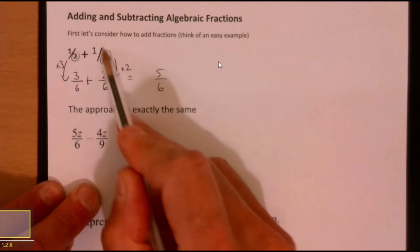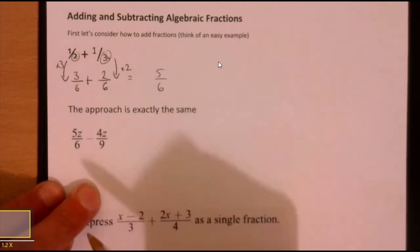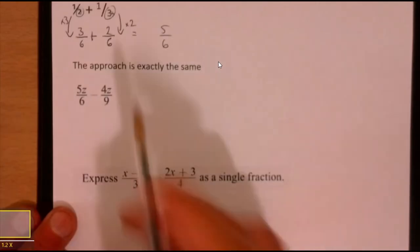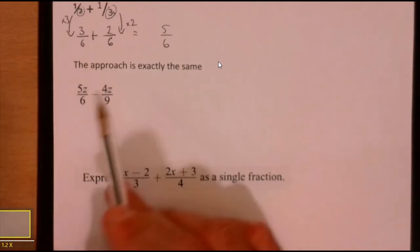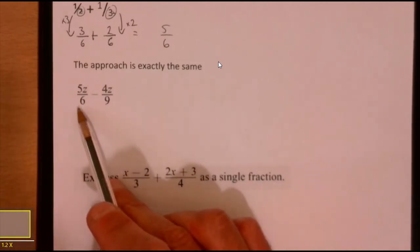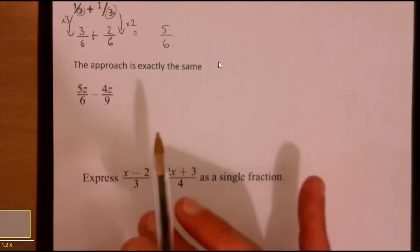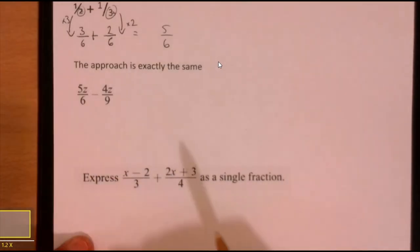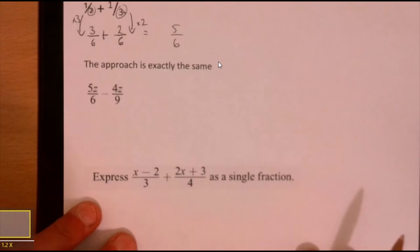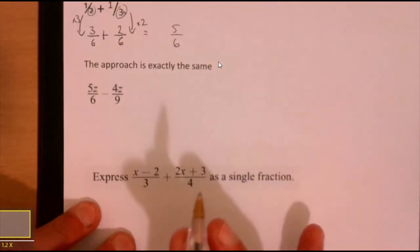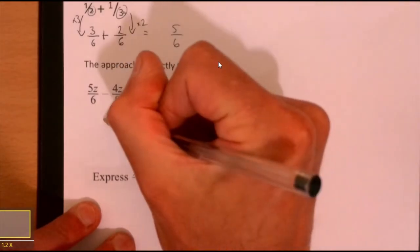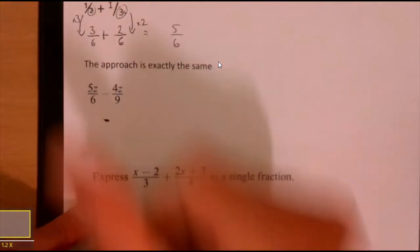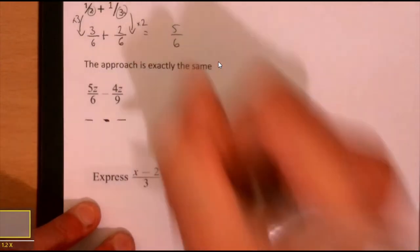So you multiply top and bottom here by 3 and you multiplied top and bottom here by 2. Right, let's now look at this. Now I fully accept here that some of you might look at this and you might actually think of a better way, a quicker way of doing this, alright? But for consistency I'm going to do the same thing.